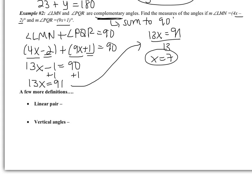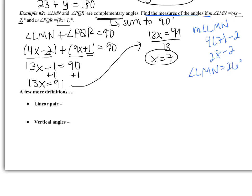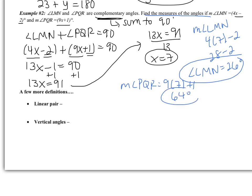The question asks to find the measures of the angles, so I need to substitute back in. The measure of angle LMN is 4 times 7 minus 2, which is 28 minus 2, so angle LMN is 26 degrees. The measure of angle PQR is 9 times 7 plus 1, which is 63 plus 1, so angle PQR is 64 degrees. Checking: since these are complementary, they should sum to 90. 26 plus 64 is 90, so the answer is correct.